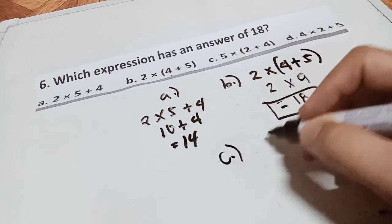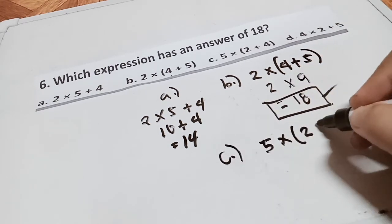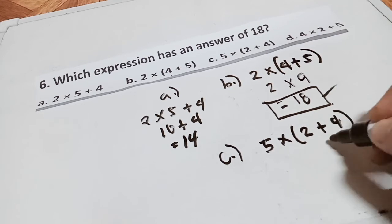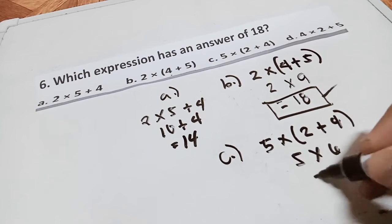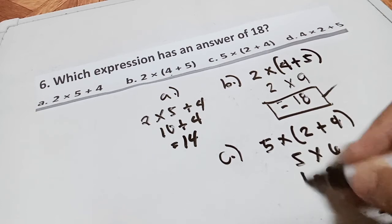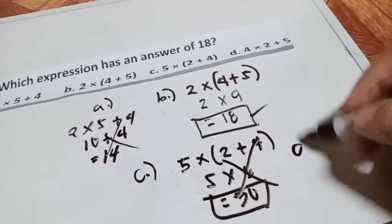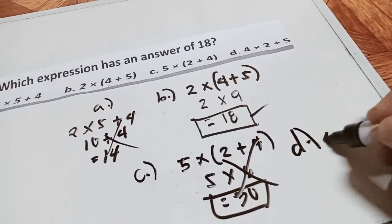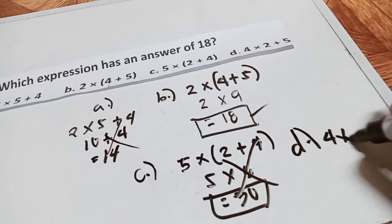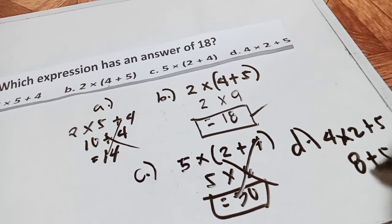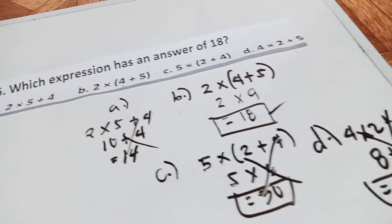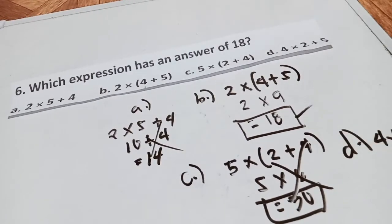Let's try to have letter C: 5 times 2 plus 4. This will become 6 times 5. The answer is 8 plus 5 is 13. That is also wrong. The best answer is letter B.